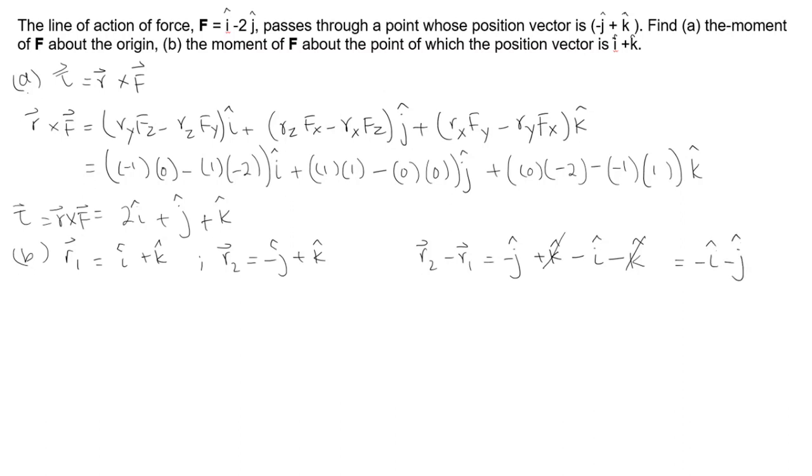So here I have this expression, the cross product in terms of rectangular components. r2-r1 will act like r. I have r = -i-j and F is already given as i-2j. So what I need to do is just plug those values in.